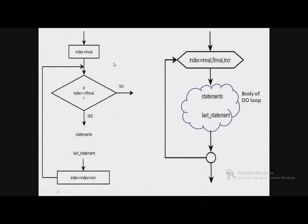This flowchart simulates the working of do-while. We can use this flowchart to understand how the DO statement works. This flowchart represents the do-while statement, and the same flowchart has been converted for use with the DO statement. We can see that the part — index equal to INVL — has moved here, FINVL has moved here, and the increment part is again shown here. This diagram shows the working of the do-while statement whereas this form shows how do-while is written.